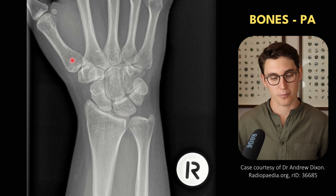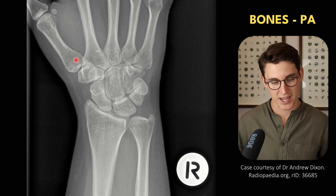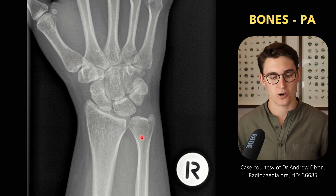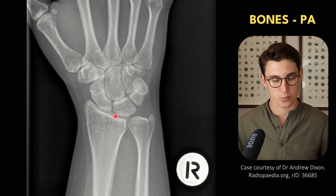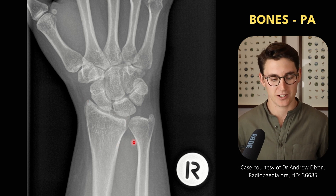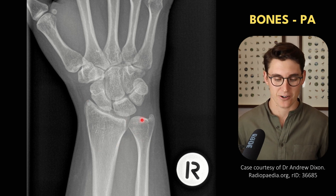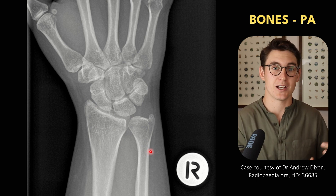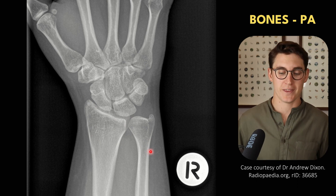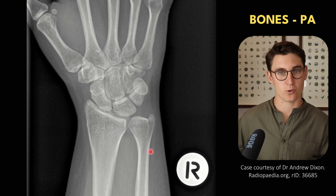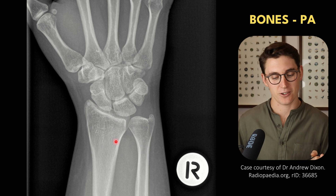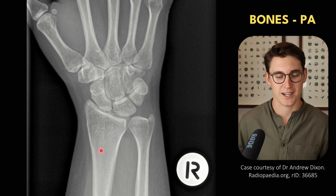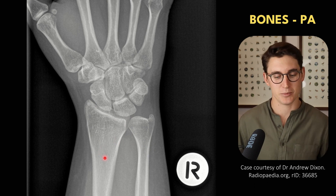The carpal bones lie between our metacarpals of the hand and our radius and ulna of the forearm. Our radius has this broad distal portion and our ulna has a narrow distal portion. That's opposite to what we saw in the elbow, where the ulna is the broad portion and the radius has that small radial head in the annular ligament.